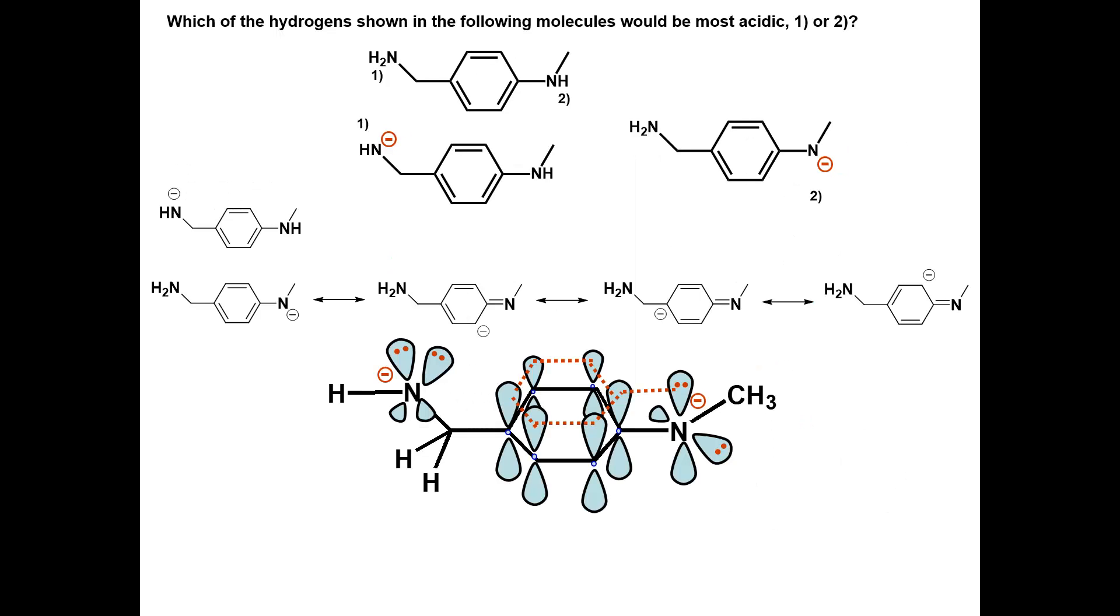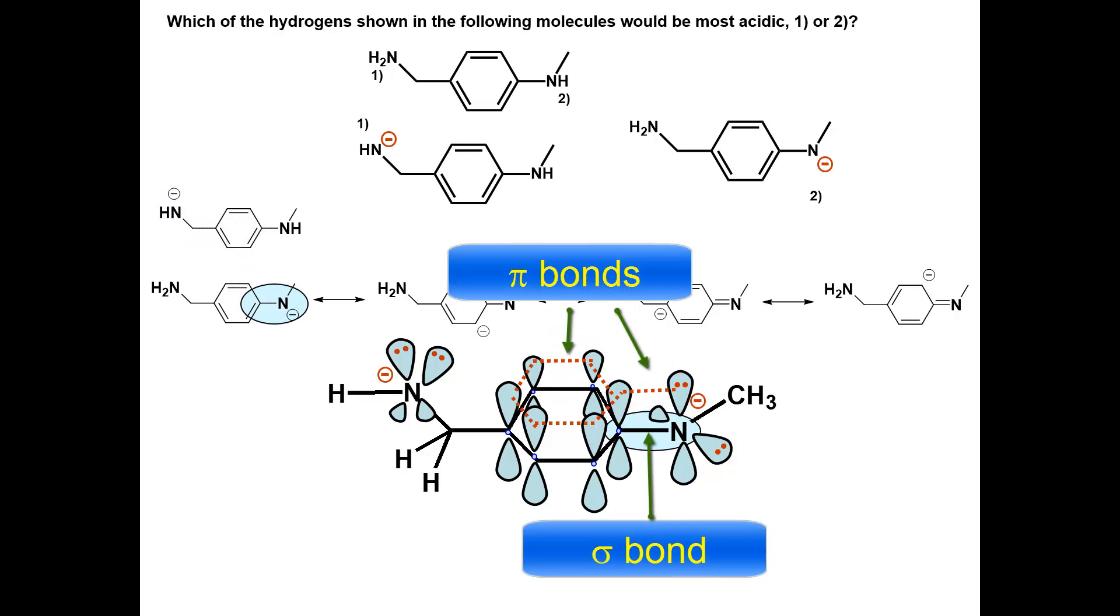Don't forget, a pi bond is created by the sideways overlap of two p orbitals. Thus a negatively charged atom must be directly bonded to the pi bond for it to resonate.